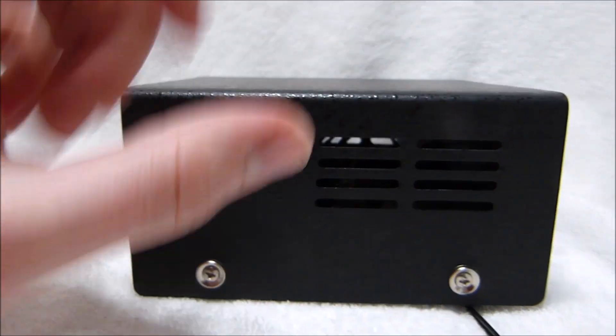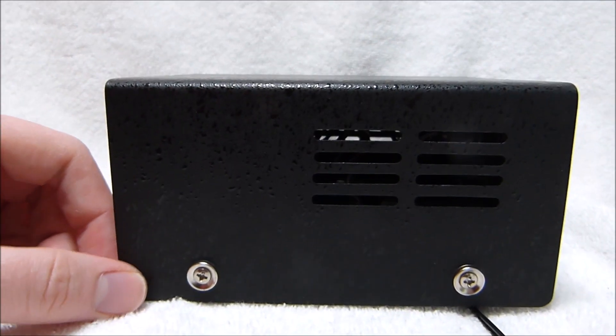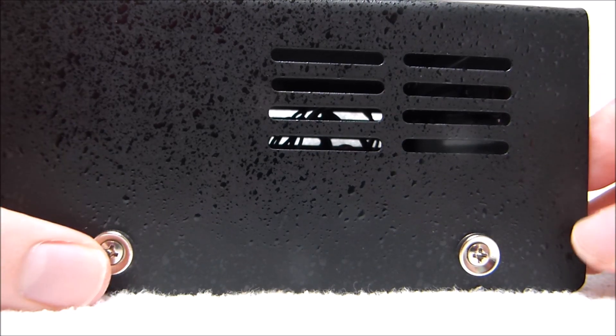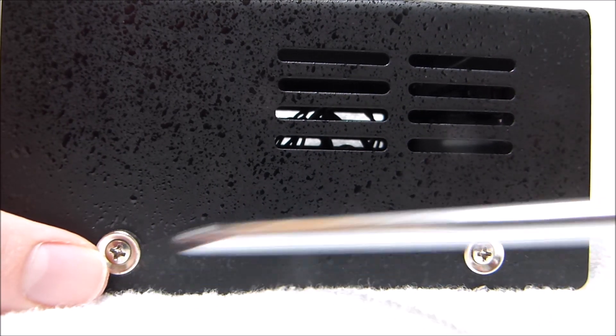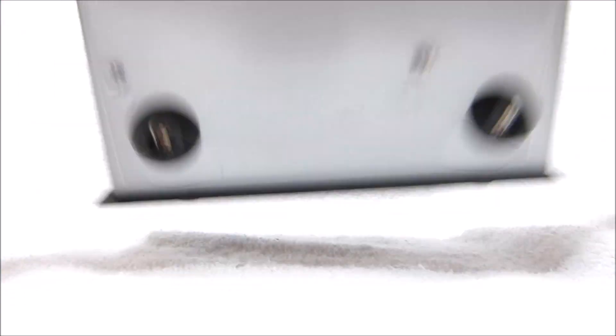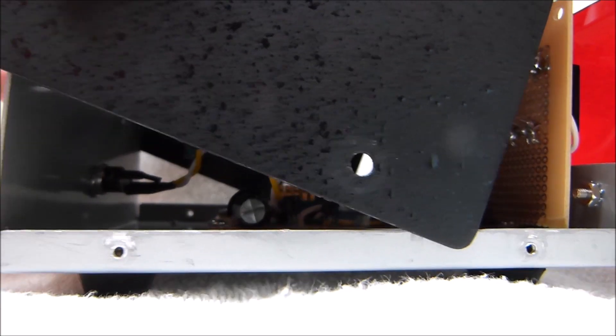I'm going to unplug it and open up the cover here so you guys can see the inside. Because it's built into a project box, it comes apart pretty easily. You just have to take out the two screws on either side, and then this cover here just lifts right off.